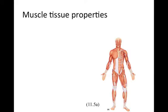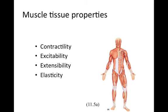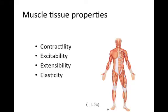Some physical characteristics of muscle tissue are that it has contractility — it can shorten and thicken — and excitability, meaning it will react when given a stimulus. It also has extensibility, the ability to stretch, and elasticity, meaning that after it's stretched it will regain its original shape. So it's sort of rubbery in that aspect.